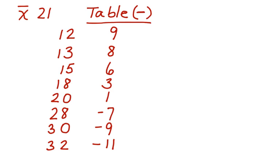Next, we need the squares of each difference. 9 squared is 81, 8 squared is 64, 6 squared is 36, 3 squared is 9, 1 squared is 1.